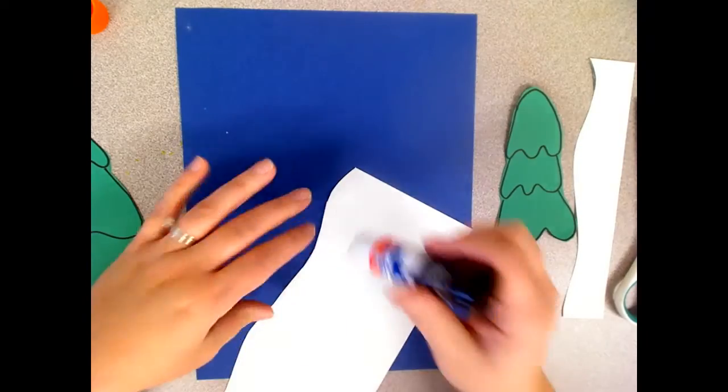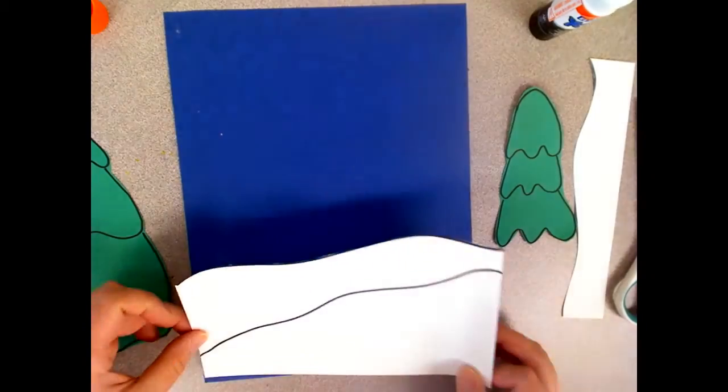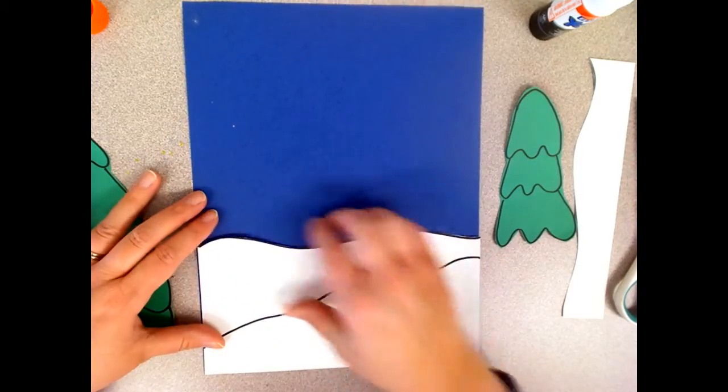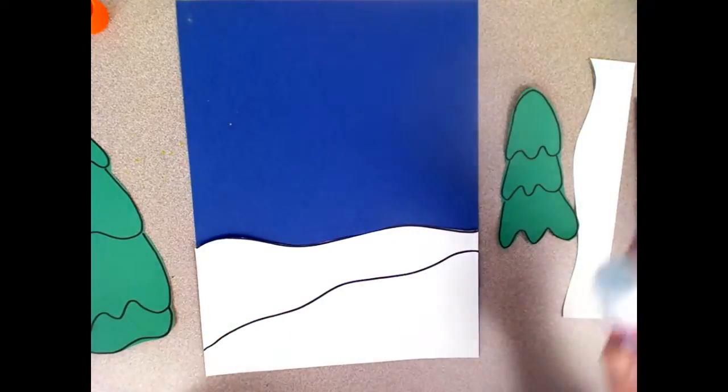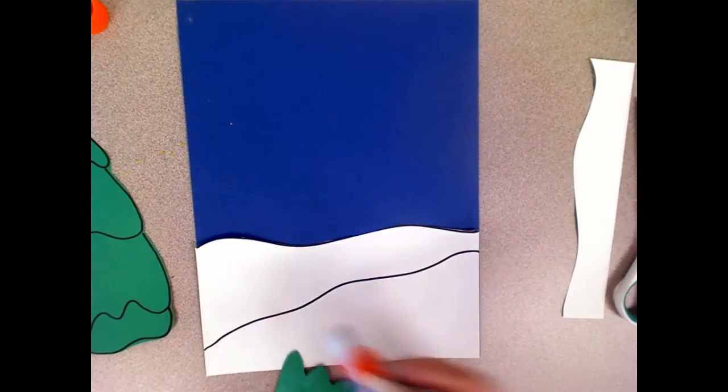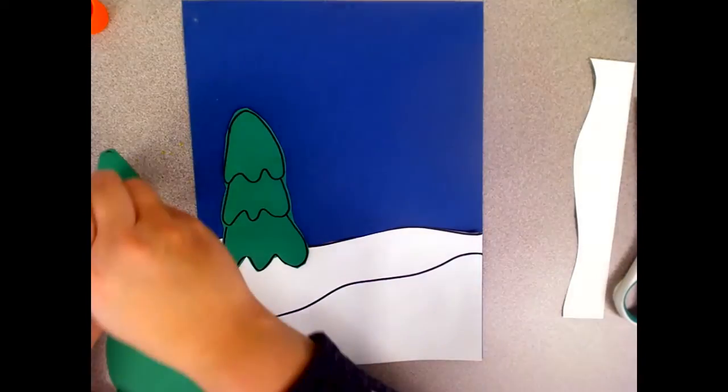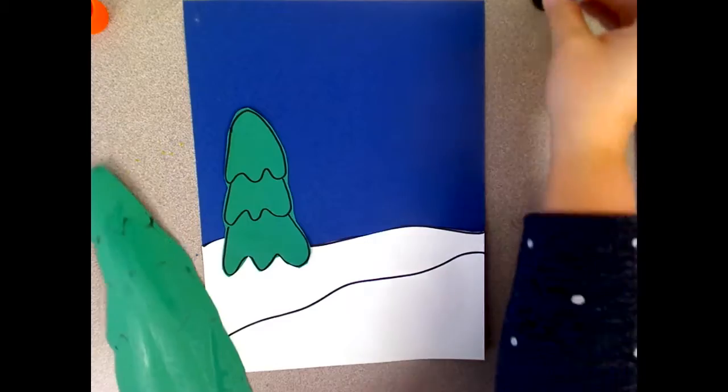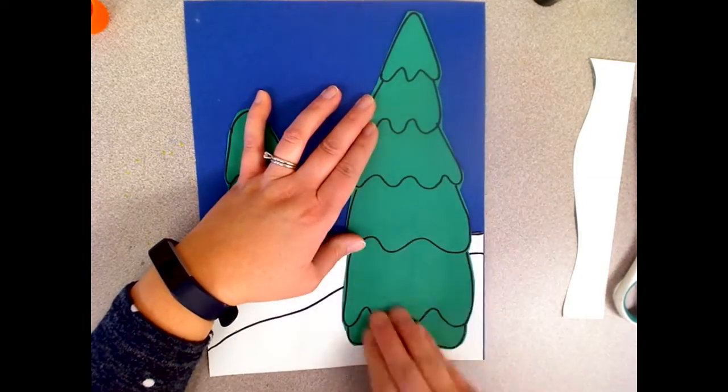Glue the back of each of the smaller pieces like the snow and the trees with a glue stick. Glue the snow so it fits the bottom of your paper. Glue the trees down next. You can glue the big tree or the little tree next, it does not matter, but make sure your little tree is in the background because it's farther away it looks smaller. The big tree goes in the front.